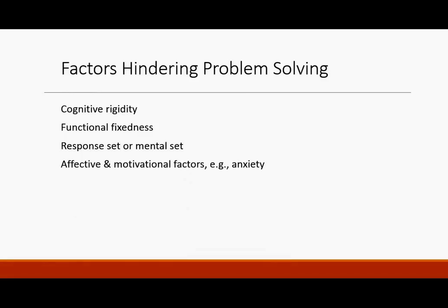Factors that hinder problem solving: when we are rigid in our thinking, when we don't think outside the box — this is cognitive rigidity. For example, I might not realize that a desk can also be stood on to dust a ceiling fan. When I don't have cognitive rigidity — when I realize that the function of a desk is not necessarily fixed — I can be more flexible, find solutions, and get creative. Normally we go to a response set or a mental set of usual solutions.